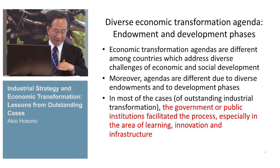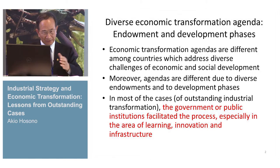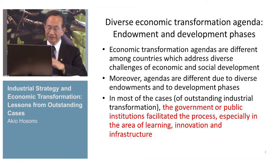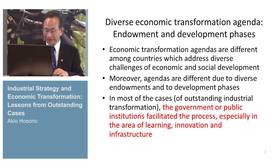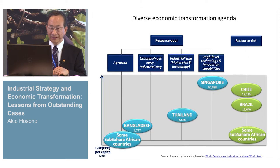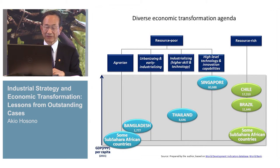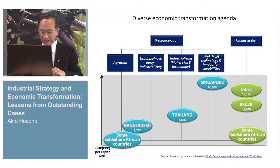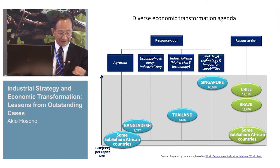In my opinion, the agenda of economic transformation and industrial development strategy is very different among countries because of different endowments and different development phases. We can make a typological approach: we need to distinguish between resource-poor and resource-rich countries, and then consider what phase of development — and then the agenda of industrial policy and transformation could be very different.